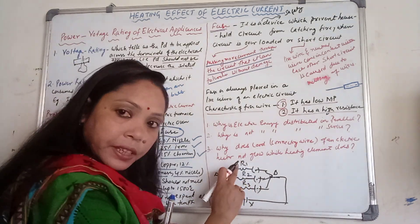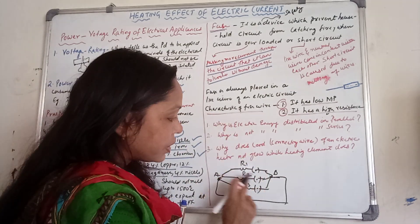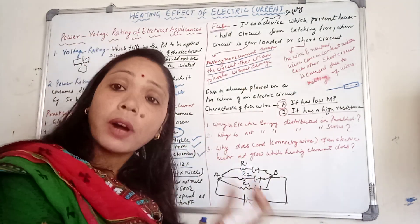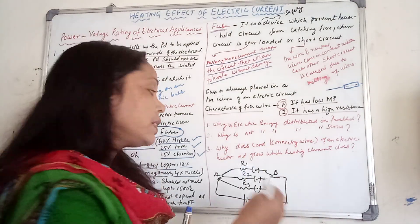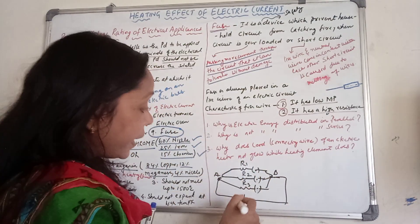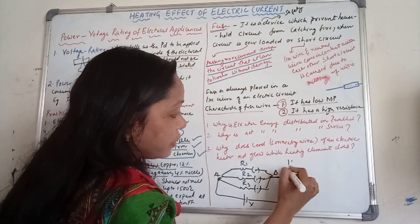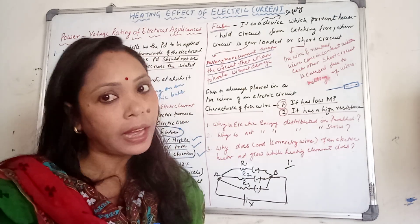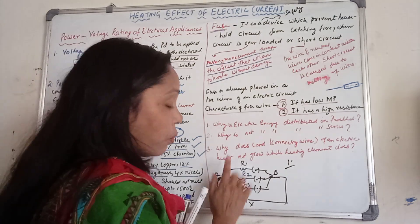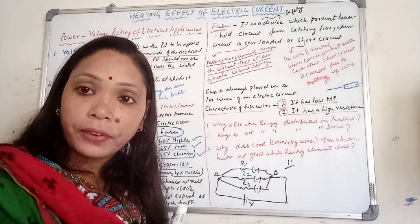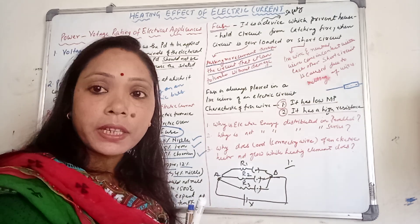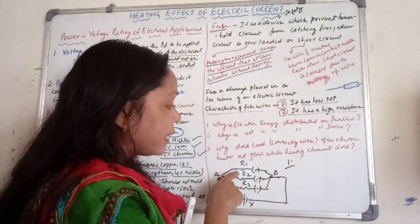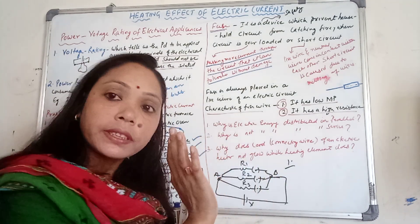Whenever you want to use a particular appliance, you can use its switch independently. So the advantages of parallel combination are: first, we can give an independent switch to each and every appliance. Second, we can give constant — same — potential difference to each and every appliance. Third, if one appliance is damaged, the other two are still working.